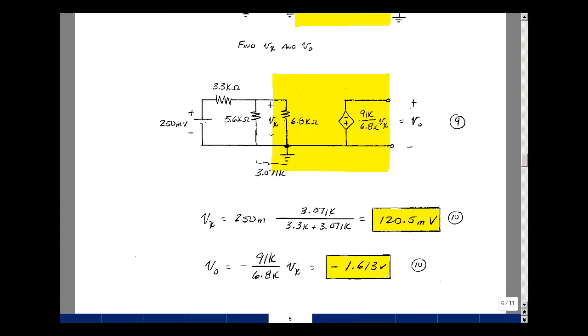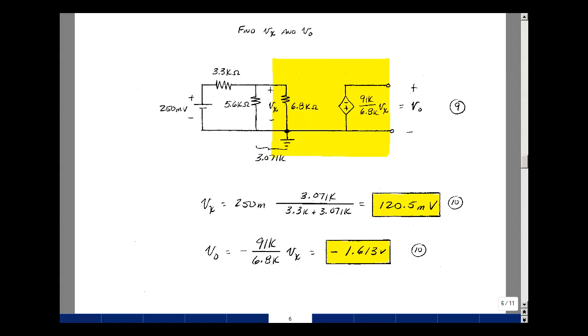And lastly, V out is minus the ratio of the resistors, 91k divided by 6.8k, then multiplying this answer of 120 millivolts. I got 1.613 volts, but again a negative sign. 10 points with partial credit, multiplying whatever you found here times this ratio with a minus sign. This is problem number four.